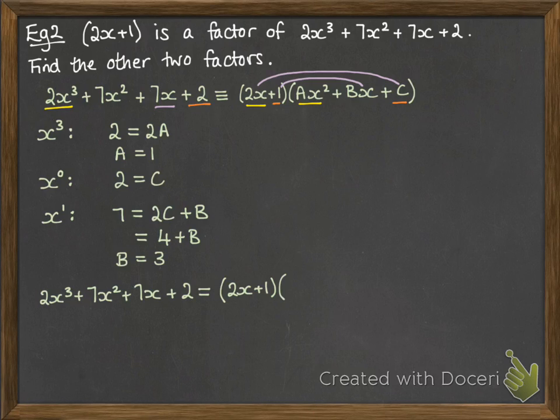And then just rewriting that into our quadratic bracket. So a was 1, b is 3, and c is 2. Now, we want to find the other two factors, so we then have to factorize that quadratic, which should be fairly straightforward.